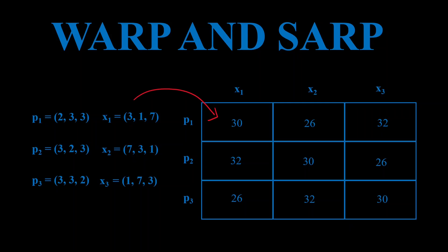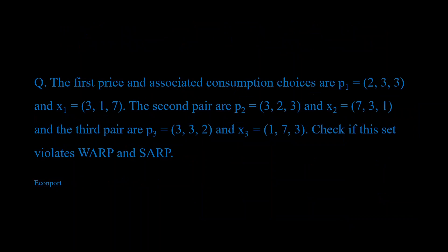In this video I'm going to solve a question asking us to check for the weak and strong axiom of revealed preference. The concept is fairly simple to understand and should not take a lot of time once you get the hang of it. This is the question — I got it from EconPort; the link for the website is in the description.